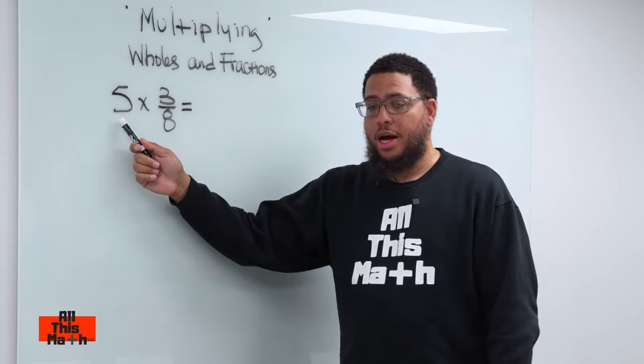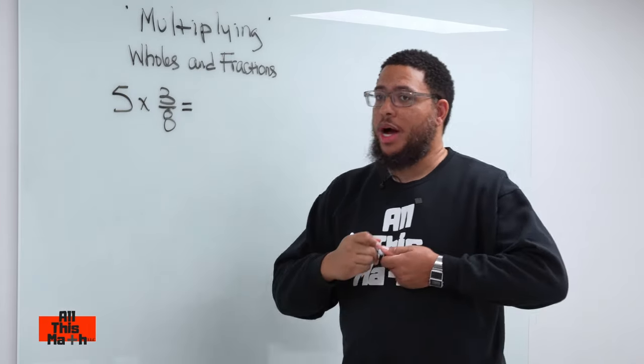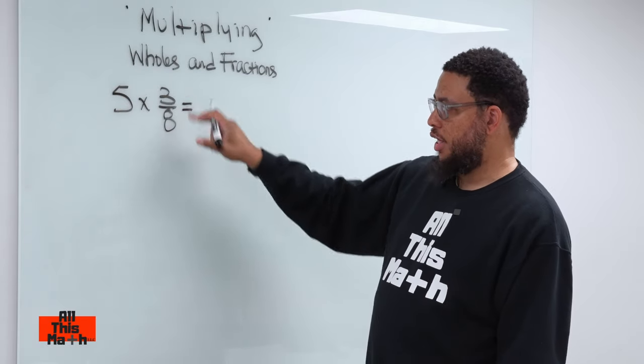So what I'm going to do is we're going to multiply a whole number by a fraction. Now I'm going to do it the wrong way and I'm going to show you why it's wrong. This is what a lot of people would do if they saw like five times three eighths.